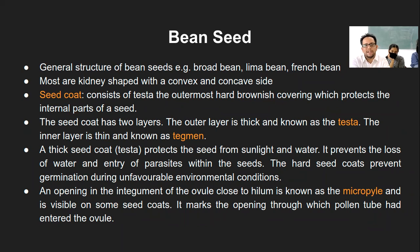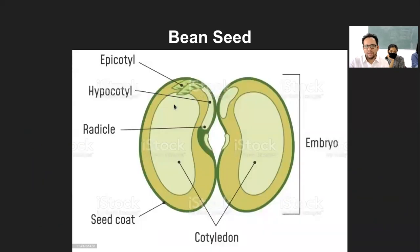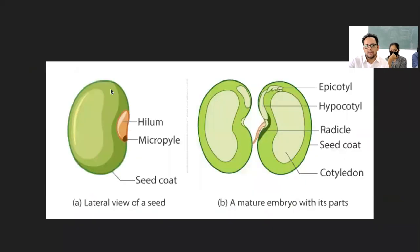Three structures are present, and within those three structures there can be subparts. Seed coat is the outermost covering. Like if you remember in this case, this dark green is the outermost cover and here it is shown in a greenish color.